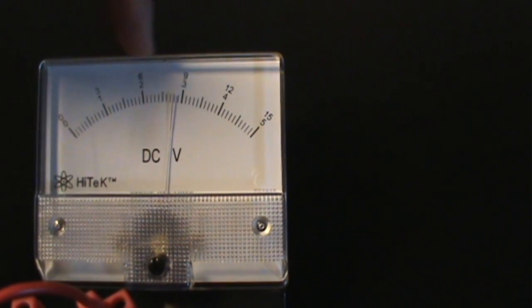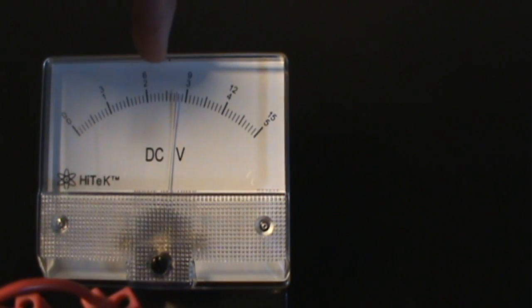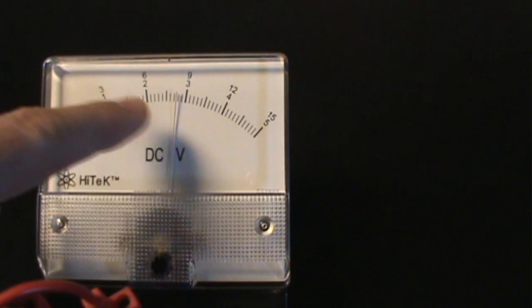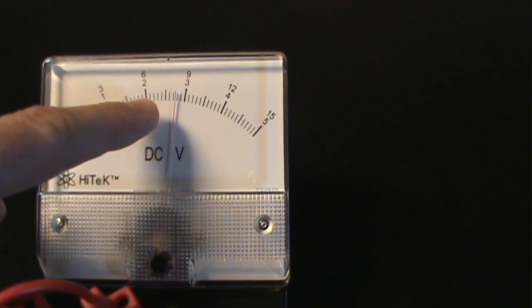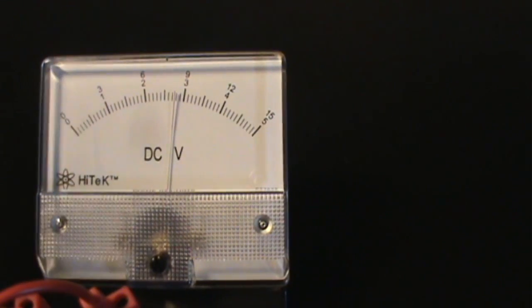And we can see now that we're between 2 and 3, that the large division is an entire volt, which means the intermediate division is 0.5 volts, which means that our very small denominations are worth 0.1 of a volt each.